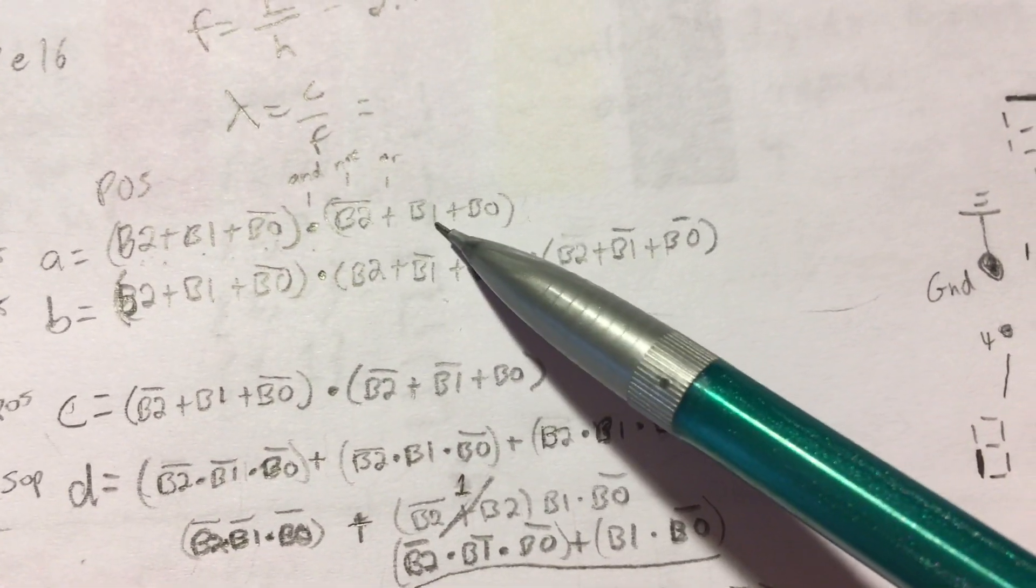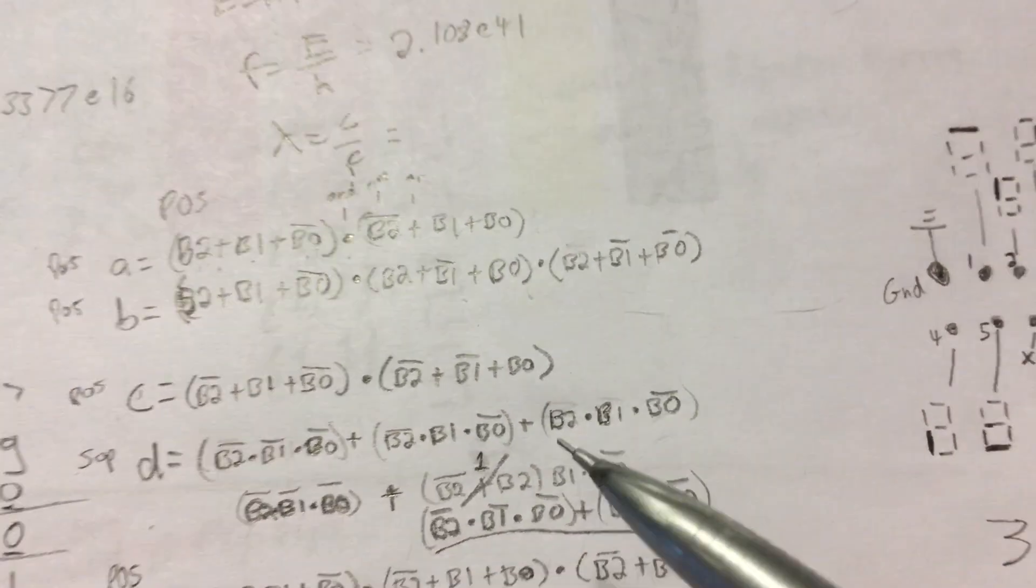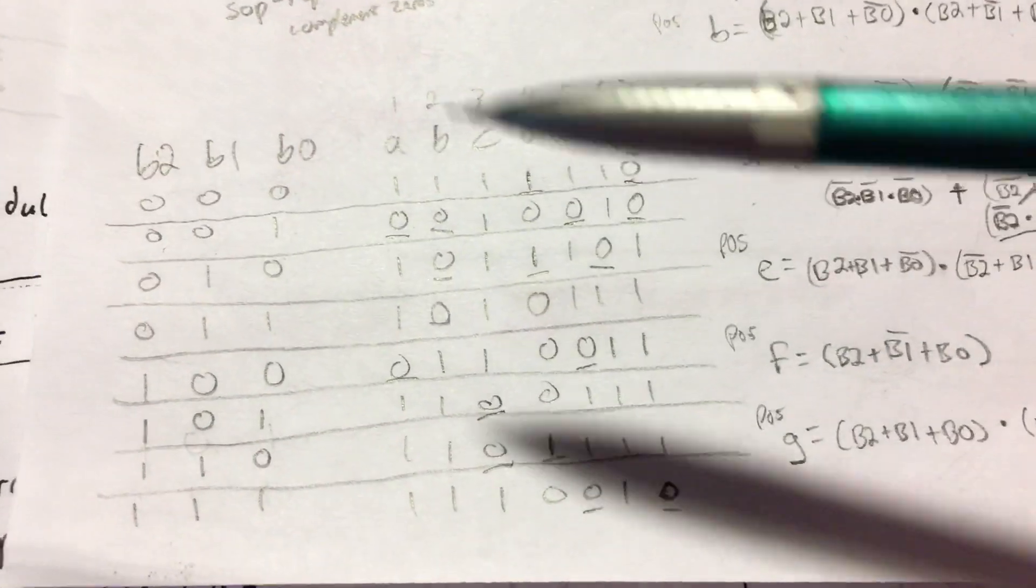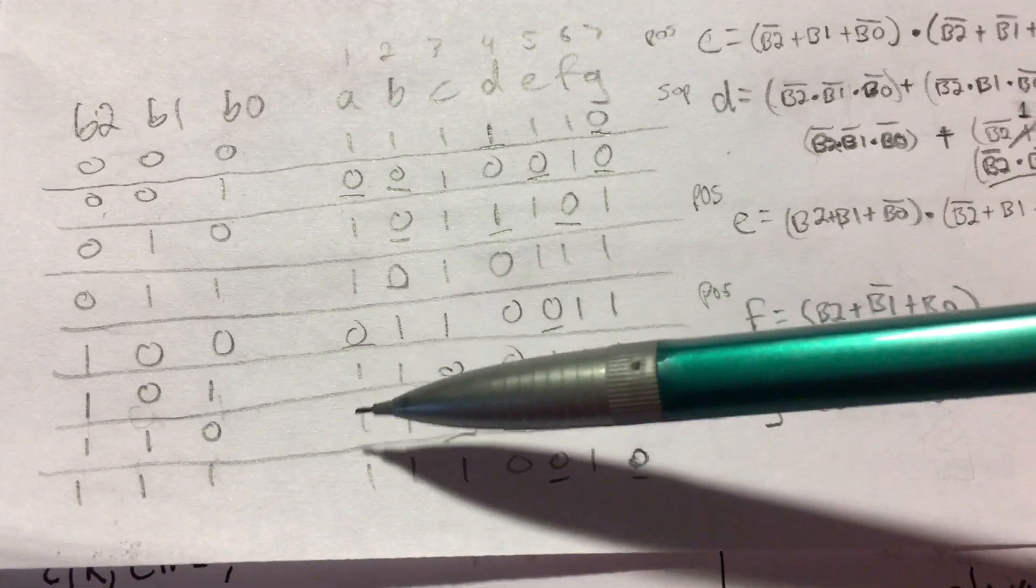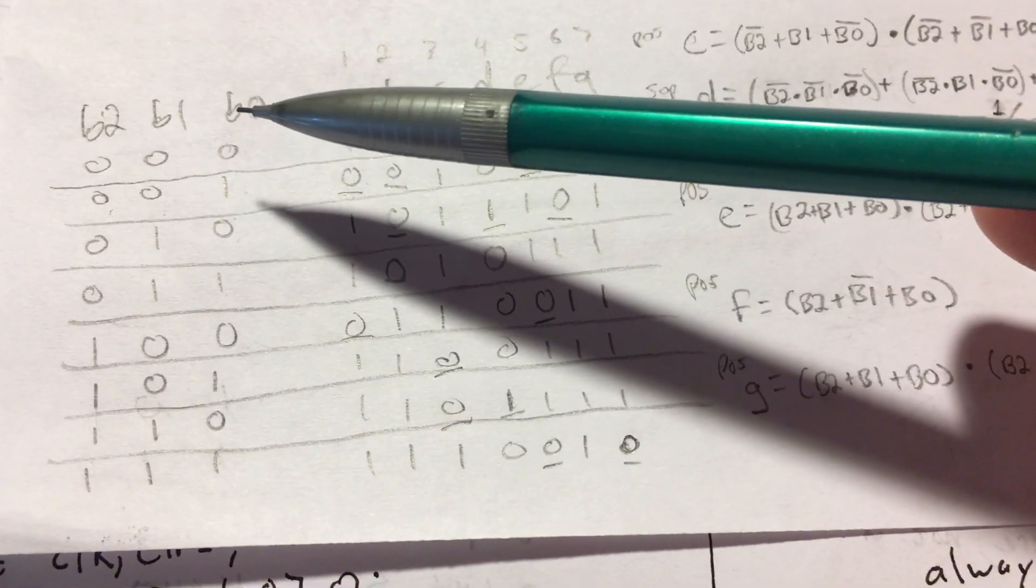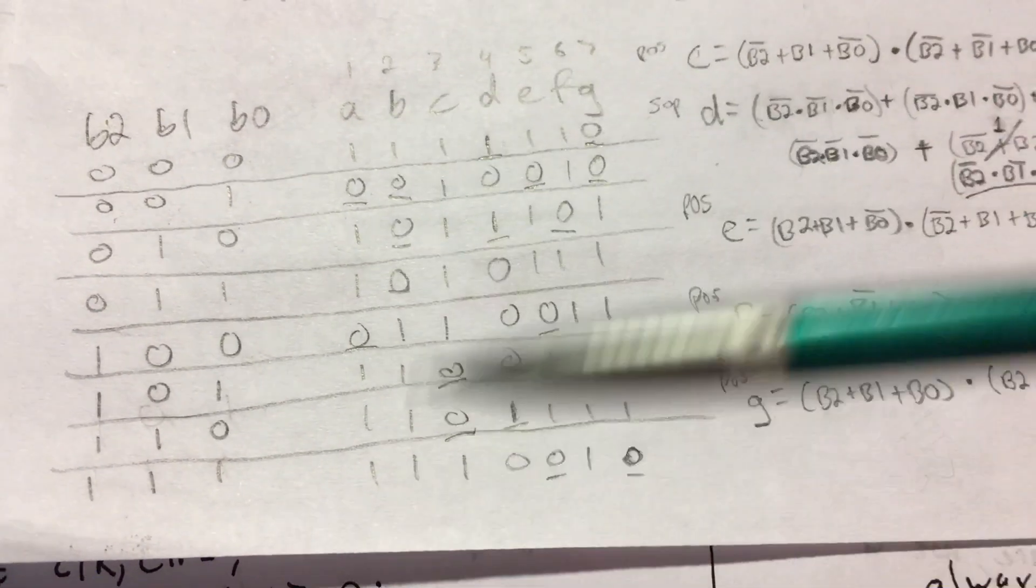And that gives us our segment A, which illuminates every time we want it based on our inputs in order to give us the right decimal digit.